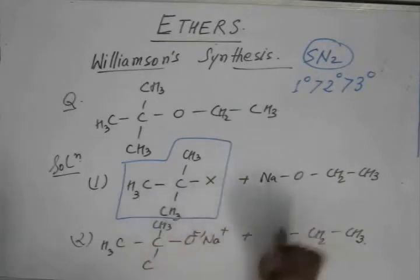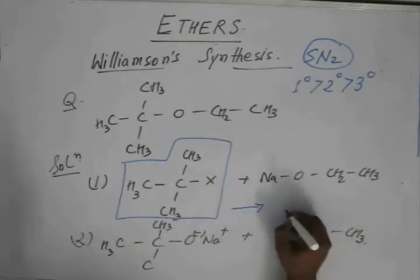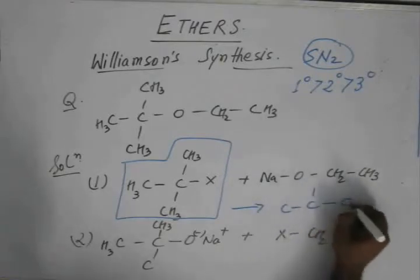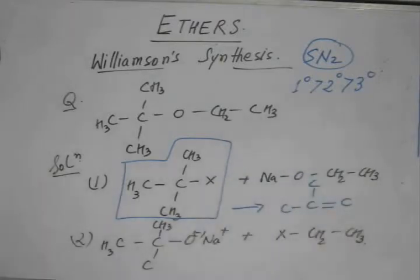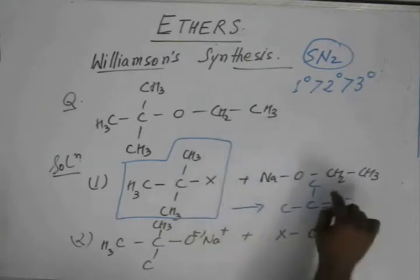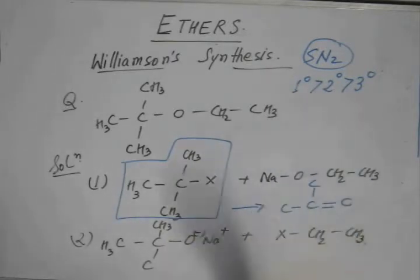The product that we get in this case is an alkene. We get this as a product. If the 3-degree alkyl halide reacts with the sodium salt of this 3-degree alcohol, we get 2-methylpropene.